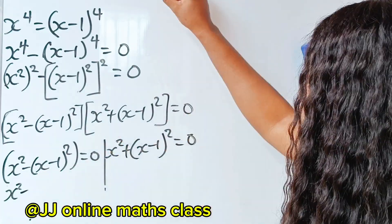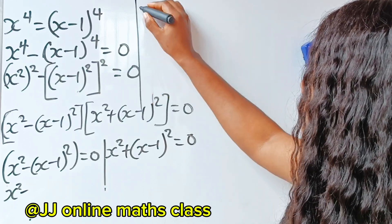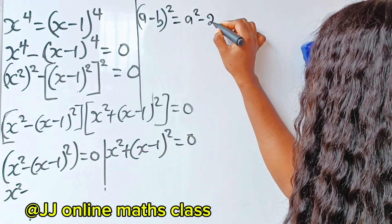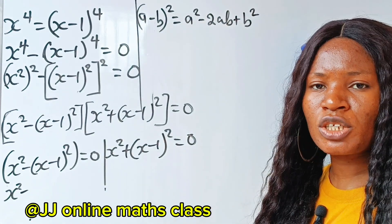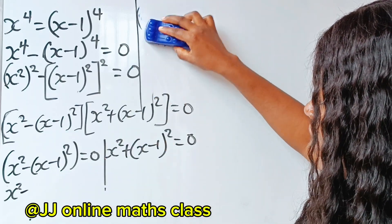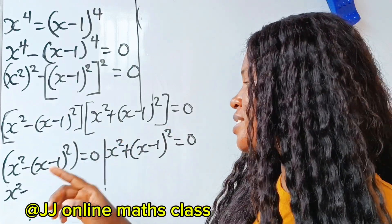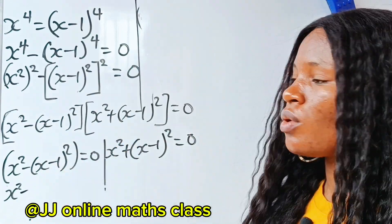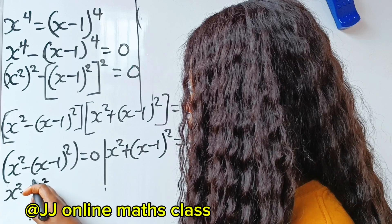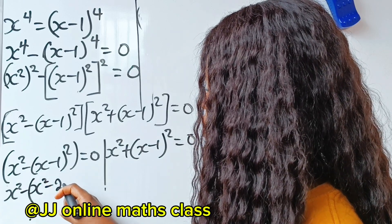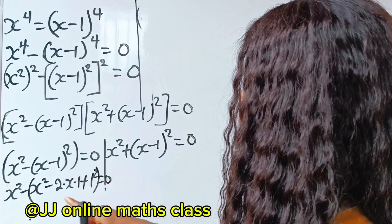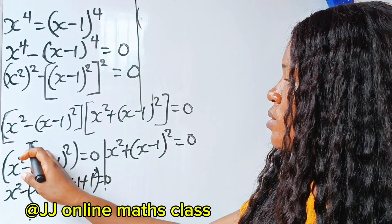We have x squared minus, and where you have a minus b squared, according to our algebra identity, a minus b all squared equals a squared minus 2ab plus b squared. In this case our a is x and our b is 1. So we have x squared minus 2 times x times 1, plus 1 squared, equal to 0.